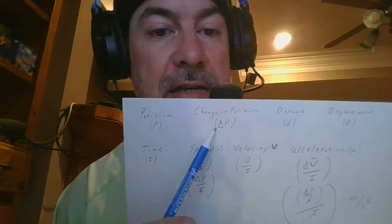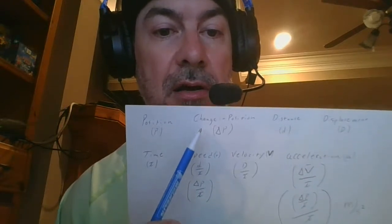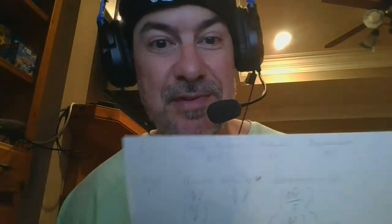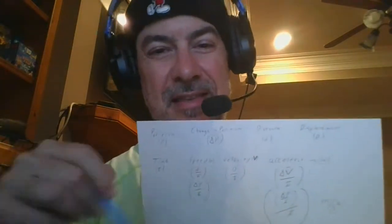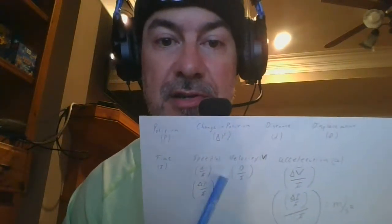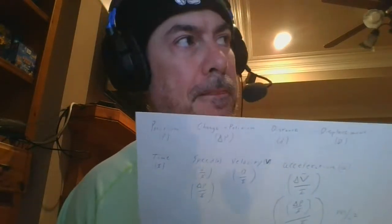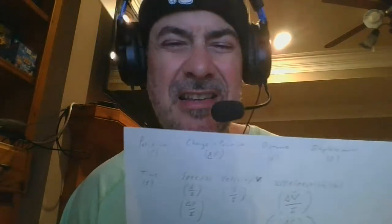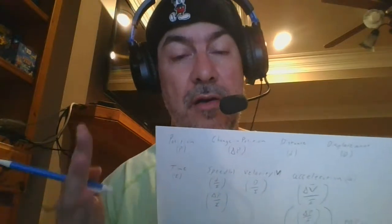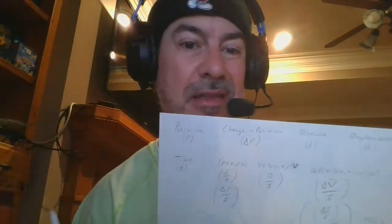Delta p means change — delta means change. Kind of appropriate like Delta Airlines: Delta Airlines changes your position. Change in position is delta p. Some of you may ask, is that the same thing as pf minus pi? Yeah, because wherever you end, you've got to subtract wherever you started, and that's your change. Delta change is the final minus the initial.